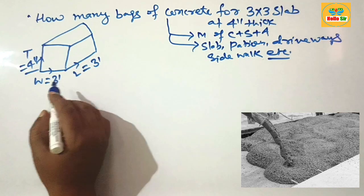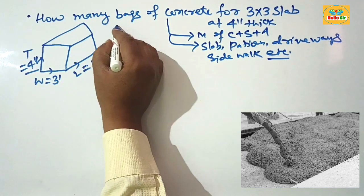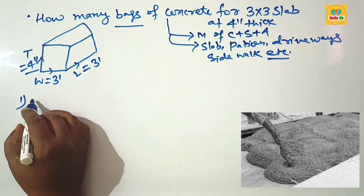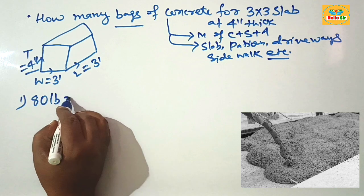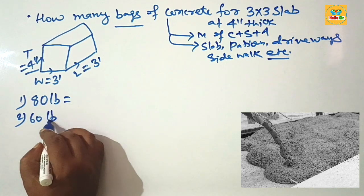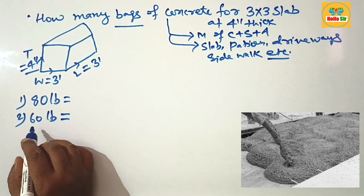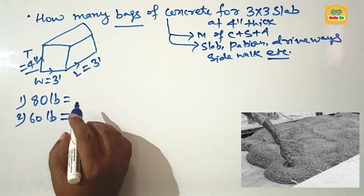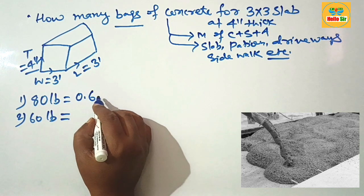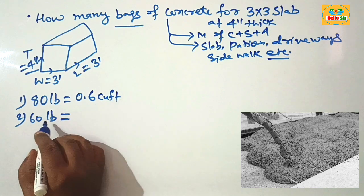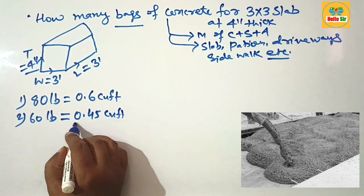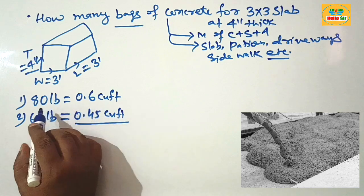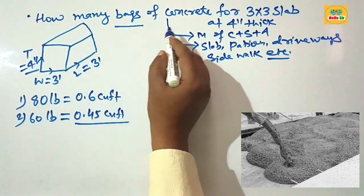These are the dimensions of this slab, and you have to find out how many bags of concrete are needed. Concrete bags come in many weights like 80 pounds and 60 pounds, and smaller bags of 50 and 40 pounds are also available. An 80-pound bag of concrete yields a volume of about 0.6 cubic foot, and each 60-pound bag yields about 0.45 cubic foot. Remember these values as they help in your calculation.